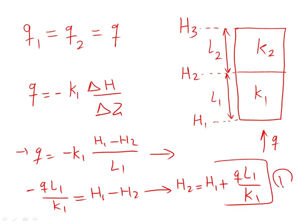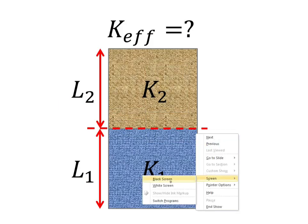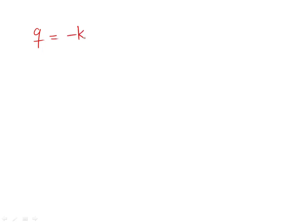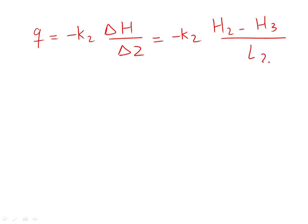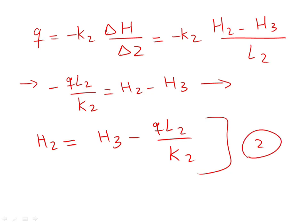Let's call this equation number one. Now we follow the same procedure for layer two: Q equals minus K2 times the pressure gradient across layer two, which equals minus K2 times (H2 minus H3) divided by L2. From this equation, we get H2 equals H3 minus Q times L2 divided by K2. Let's call this equation two.